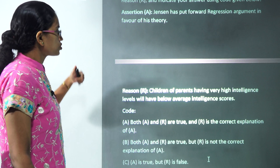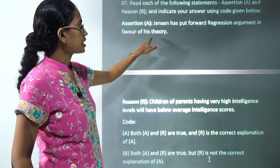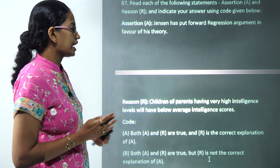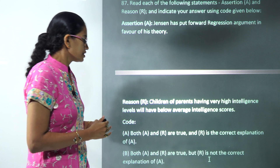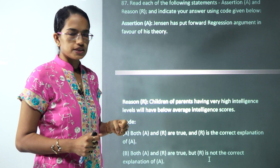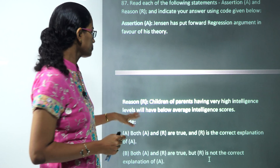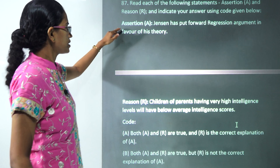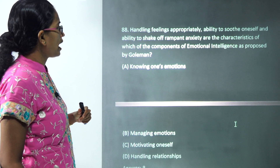The next assertion-reason question covers Jensen's regression argument in favor of his theory on intelligence and race — the assertion is correct. The reason states that children of parents with very high intelligence will have below-average intelligence scores. Since this is stated as a certainty rather than a possibility, it is incorrect. So assertion is true and reason is false.